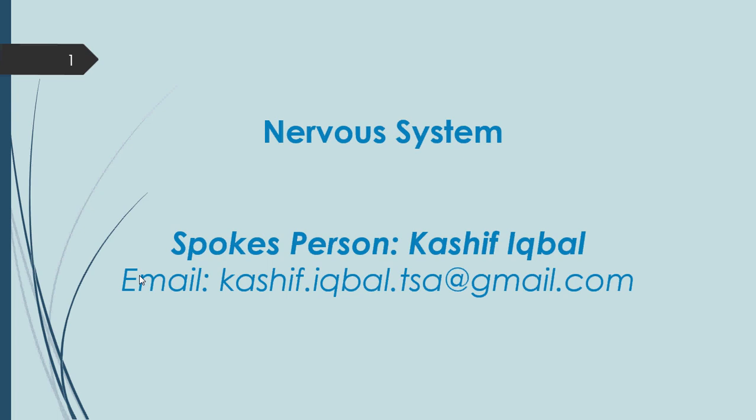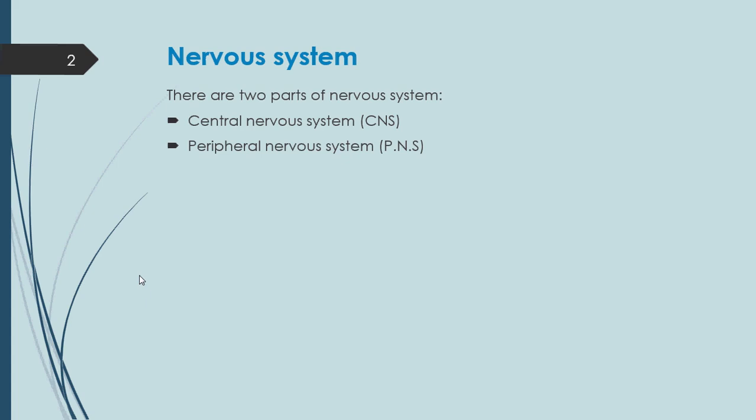There are two parts of the nervous system. Number one is the Central Nervous System, short form CNS. Number two is the Peripheral Nervous System, short form PNS. Now we are going to talk about the details of each.